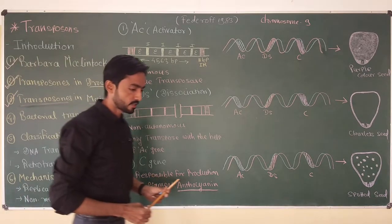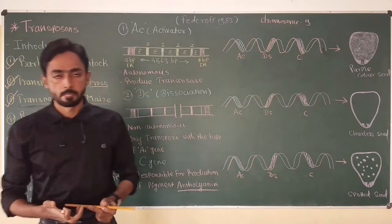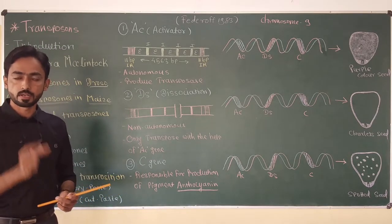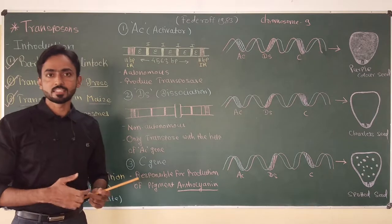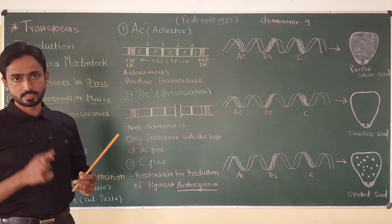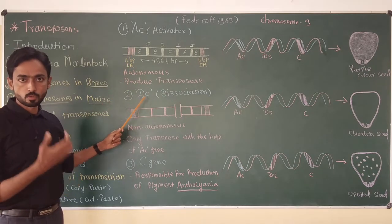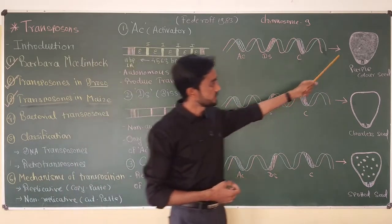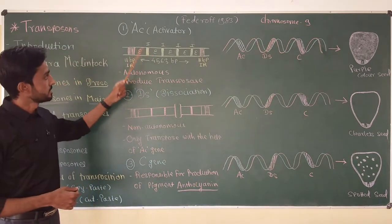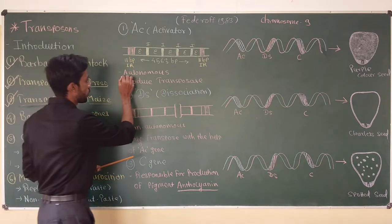As I mentioned, Barbara started her experiments on the maize plant in 1944 and within four to five years, she performed a number of experiments and found two important sequences on chromosome number 9 of the maize plant responsible for colour change — the AC and DS elements. AC, or the Activator, is a sequence of nucleotides present on the maize chromosome and it is an autonomous sequence. Autonomous transposable elements do not require help from other elements for transposition.